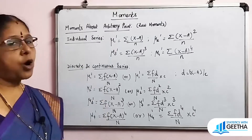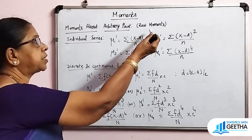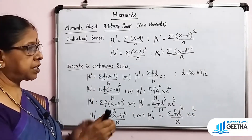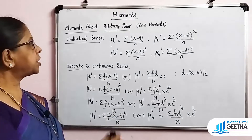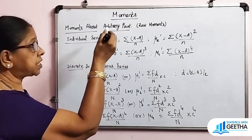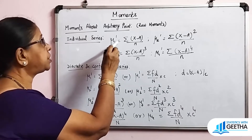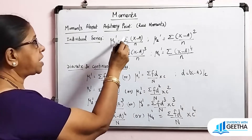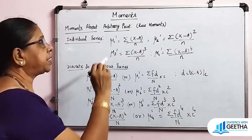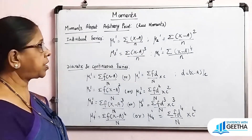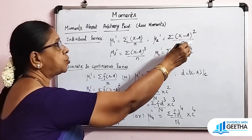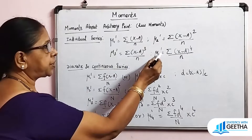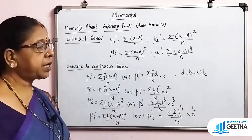Now let's look at moments about an arbitrary point, also called raw moments. For individual series: mu1' = summation (x − A) / n; mu2' = summation (x − A)² / n; mu3' = summation (x − A)³ / n; mu4' = summation (x − A)⁴ / n. Here A is the arbitrary point.